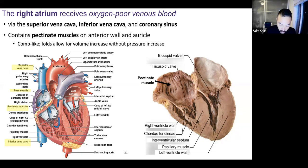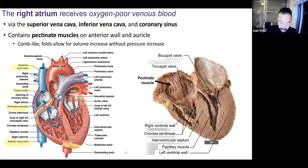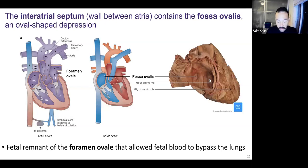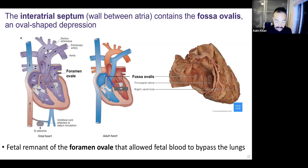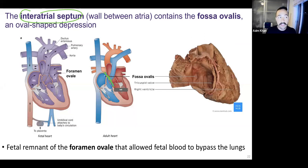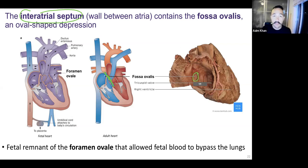From the right atrium, we pump blood through the tricuspid valve into the right ventricle. Still on the atrium, we have the septum — the wall between the left atrium and right atrium, that's the interatrial septum. The interatrial septum has an oval-shaped depression. If you look at this cadaver heart, we've cut into the right atrium and it's been flapped open. You can see in the septum there's this oval depression here. The word for that oval depression is fossa ovalis.